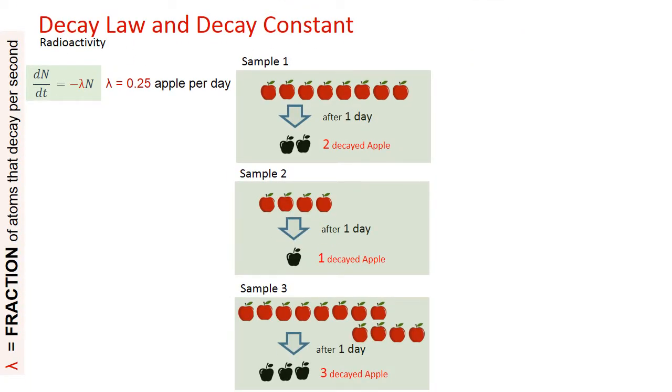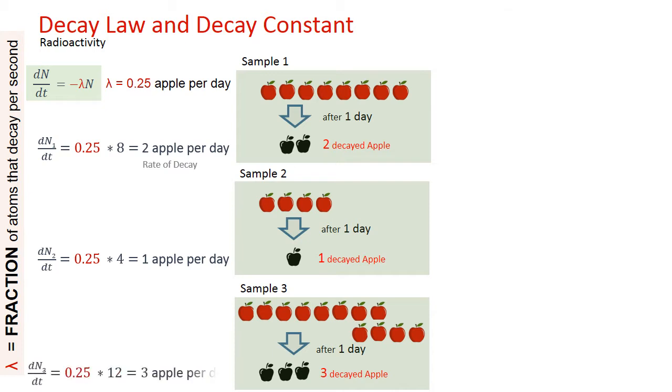Lambda being a fraction of atoms that decay is a very important concept here. In our example, we have two out of eight apples decaying, which is equal to one upon four apples decaying, and therefore we take lambda as 0.25 apples that are decaying per day. So with that we get the decay rate as two for sample one and one for sample two, and three for sample three.